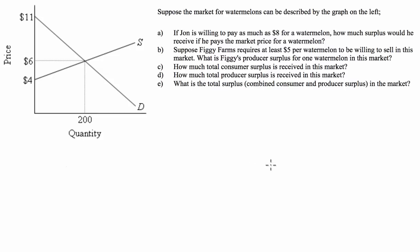If John is willing to pay $8 for a watermelon and he pays the market price, what we're asked is how much less is the market price than $8. We go to our graph and find the equilibrium price and quantity. This is our equilibrium — let's mark it with an 'e' — and that's going to be $6.